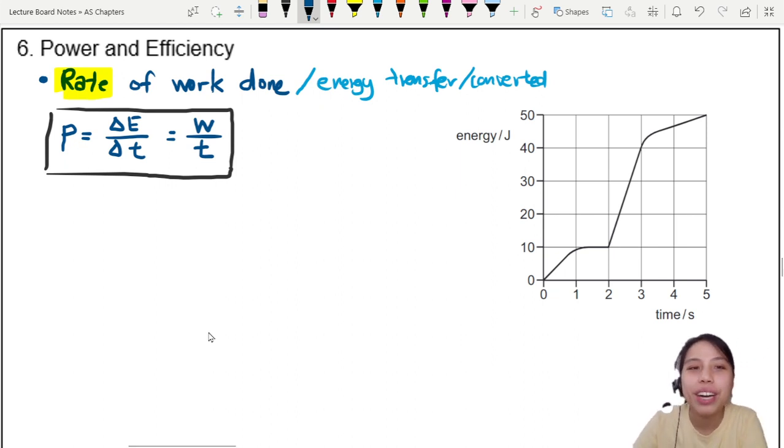Reminder, rate of work done is also dE/dt, right? And that's the gradient of an energy time graph, which is the one that you see on the right side.